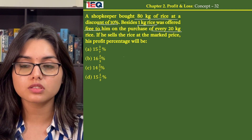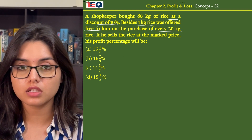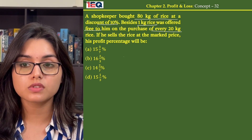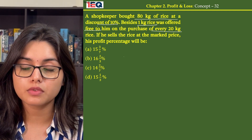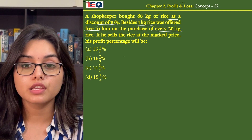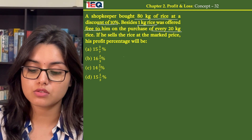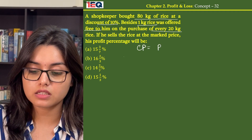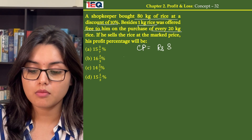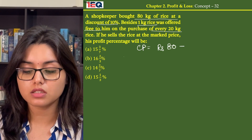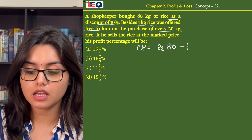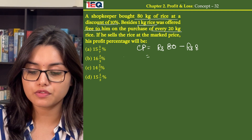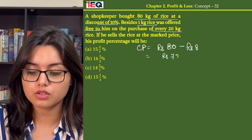Let's assume that the cost price of 1 kg rice is Rs 1. So he was supposed to buy it at Rs 80, but he got a discount of 10%, so his cost price will be Rs 80 minus a 10% discount on 80, that is Rs 8. So he bought 80 kg of rice at Rs 72.